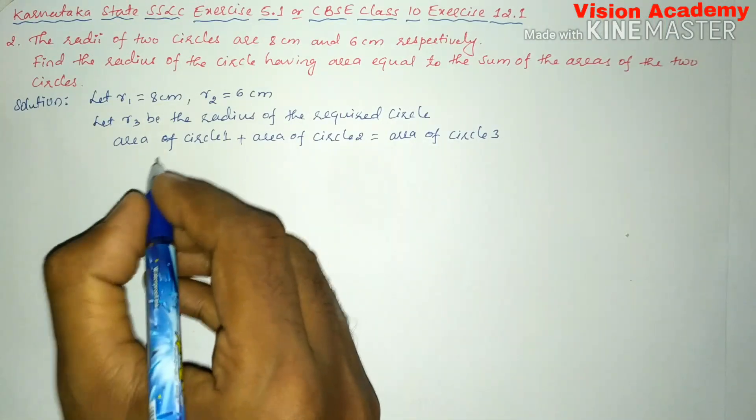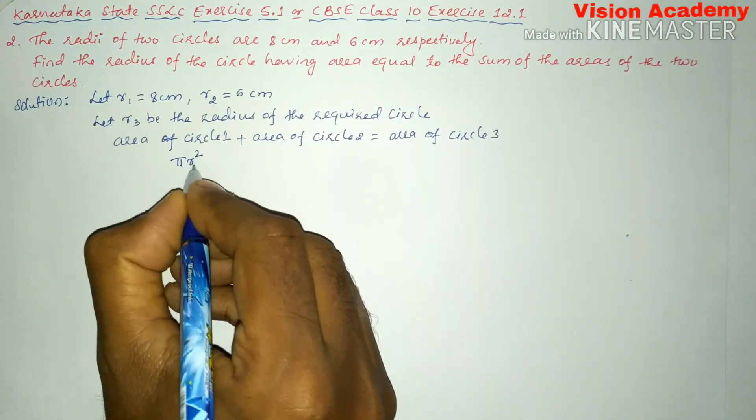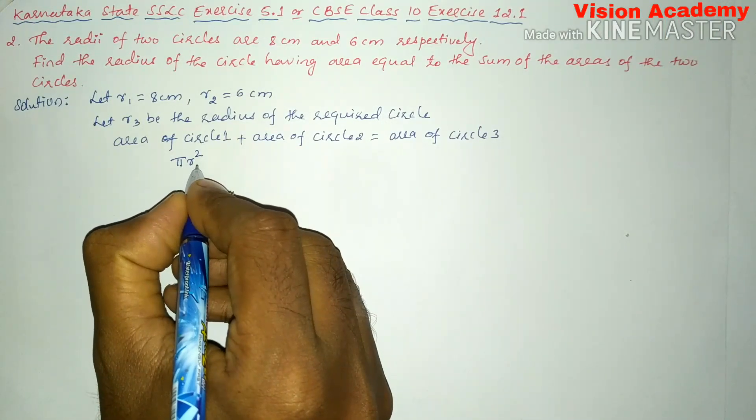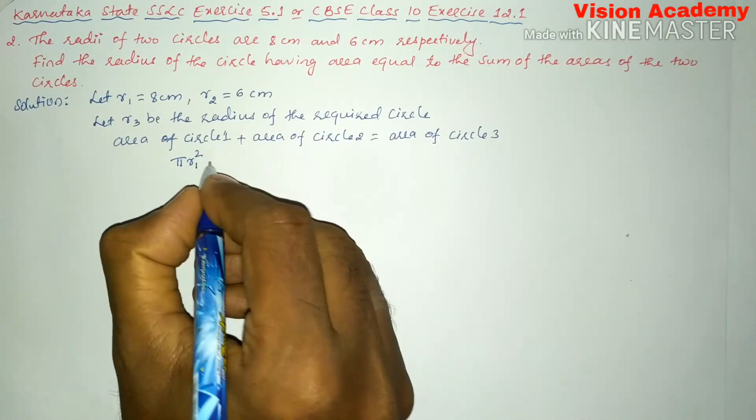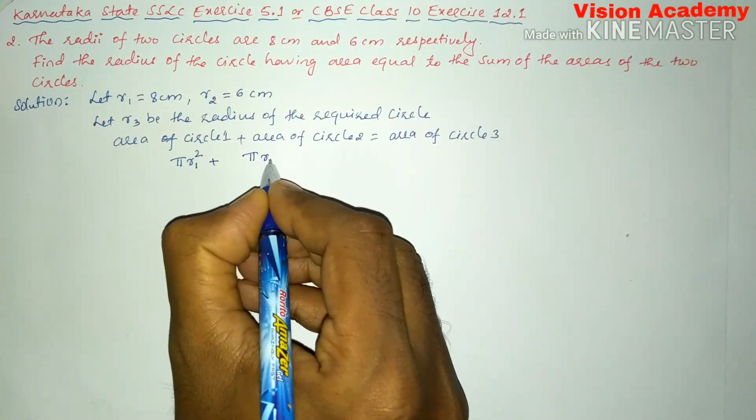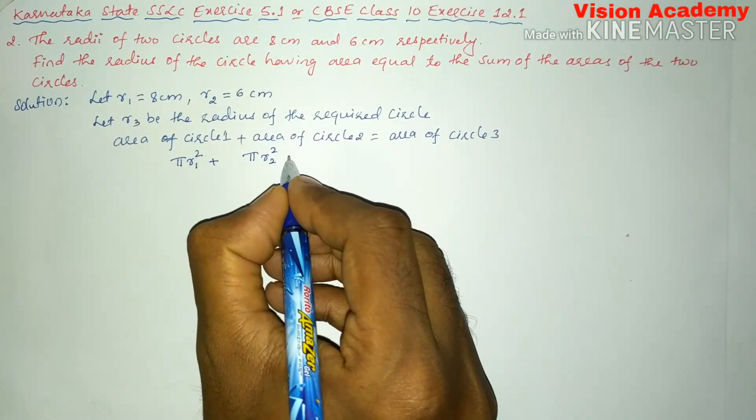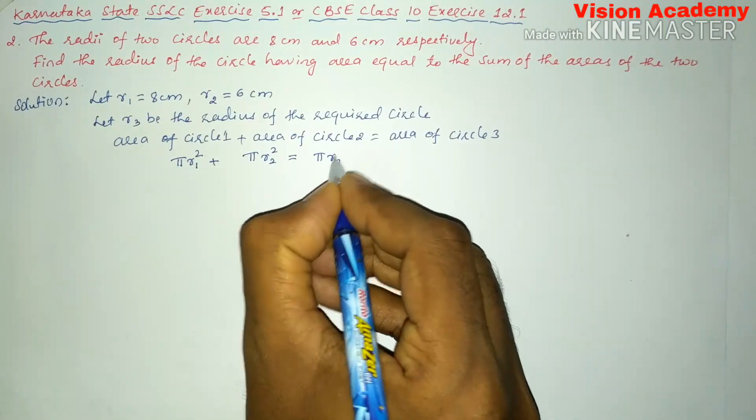Here area of circle can be written with the formula pi r square. So here pi r1 square is the area of circle 1. We will write pi r1 square plus area of circle 2 is pi r2 square equals area of circle 3 which is pi r3 square.